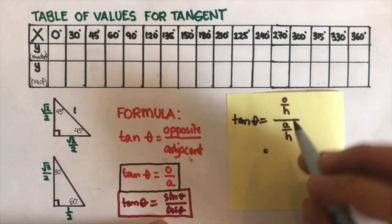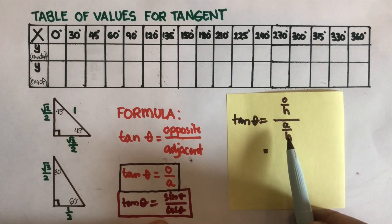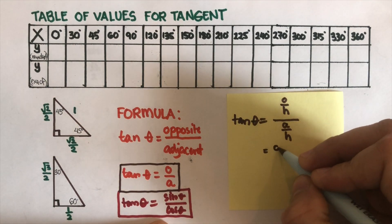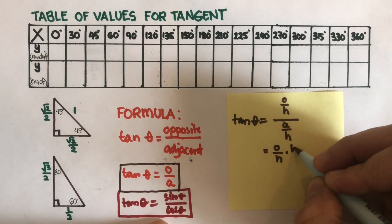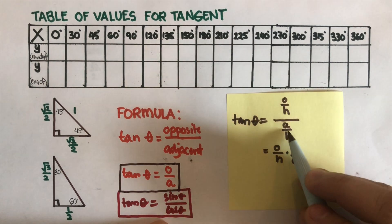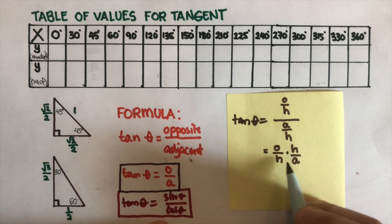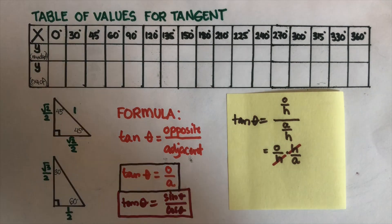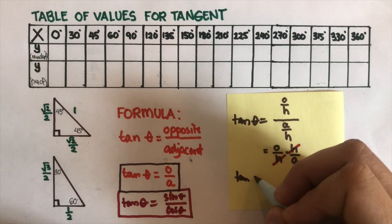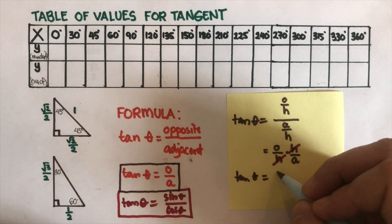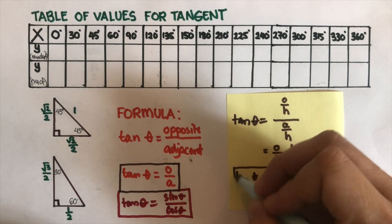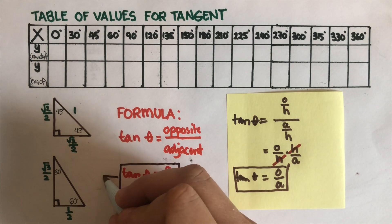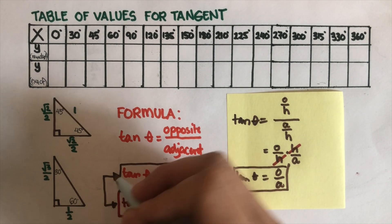Let's simplify this since this is a complex fraction. In a complex fraction, we flip the bottom and multiply across. So this would be opposite over hypotenuse times hypotenuse over adjacent. We can cross out the hypotenuse terms, so we're left with tangent theta equal to opposite over adjacent, which is equivalent to the original formula.